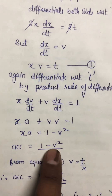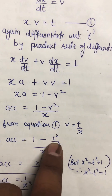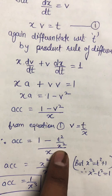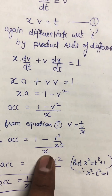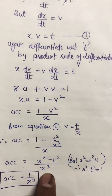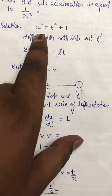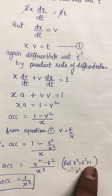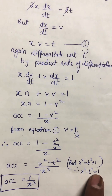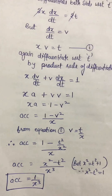Substituting v = t/x, we get v² = t²/x². So a = (1 − t²/x²) / x = (x² − t²) / x³. From the original equation x² = t² + 1, we know x² − t² = 1. Replacing this, acceleration = 1/x³. This completes the proof.